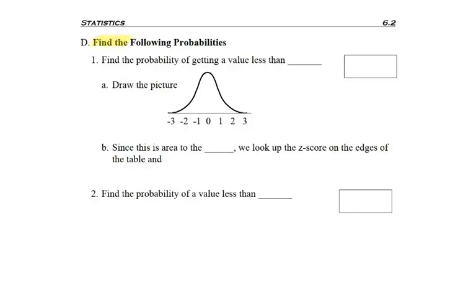Okay, so practicing a couple probability questions. Question one, find the probability of getting a value less than negative 1.81.